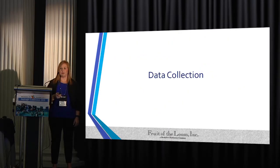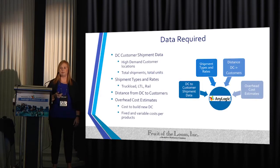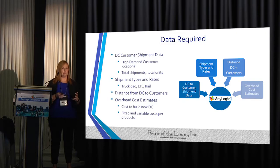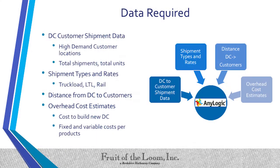Data collection required quite a bit of data from our transportation teams and other teams across the company. We first wanted to look into customer shipment data, focusing on high-demand customers for this particular category, which made up 85% of shipments. We looked at their total shipments, all their different orders per year in total units, and their shipment types — just truckload, LTL, and rail.